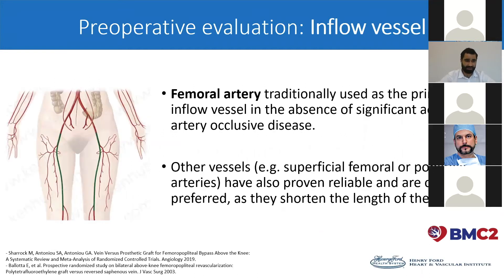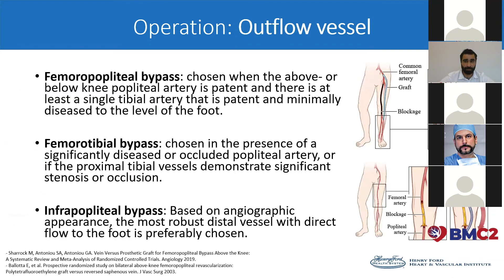As for the inflow vessels, traditionally the femoral artery has been used. However, other vessels such as the superficial femoral or popliteal arteries could also be used, and they have been proven to be reliable and often preferred as they shorten the length of the conduit. As for the outflow vessels, femoral-popliteal bypass is usually chosen when the above or below-the-knee popliteal artery is patent and there is at least a single tibial artery that is patent and minimally diseased to the level of the foot. Femoral-tibial bypass is usually chosen in the presence of significant disease or an occluded popliteal artery, or when proximal tibial vessels demonstrate significant stenosis or occlusion. In general, for a popliteal bypass, the outflow is usually based on angiographic appearance, with the most robust distal vessel with direct flow to the foot being preferably chosen.